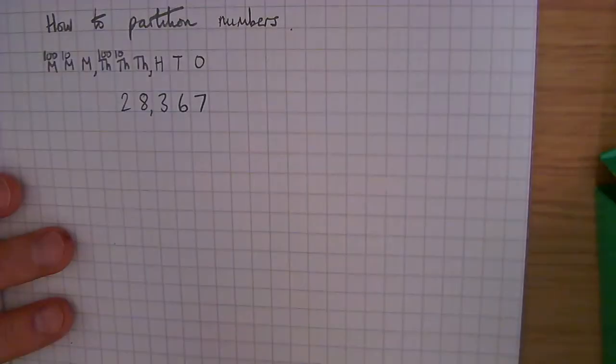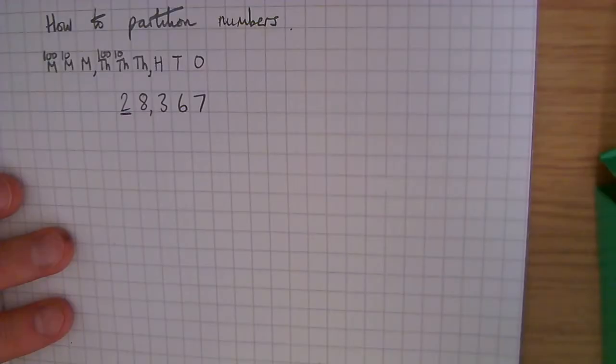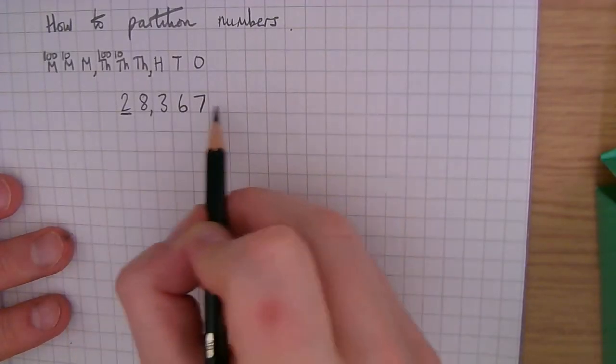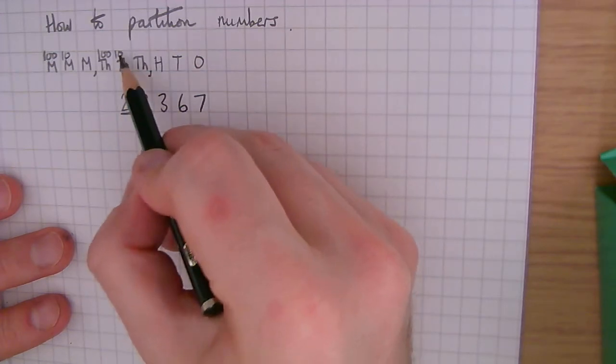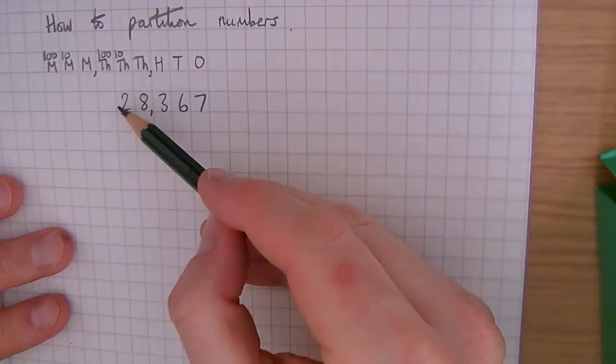Now the question might say write down the value of the underlined digits. So if it was here for example, you would write down the value of the 2 is 20,000 because it's in the ten thousands column and there's two of them, so it's 20,000.